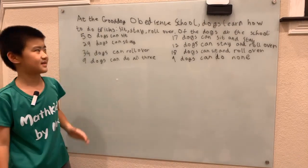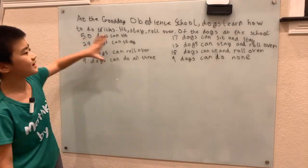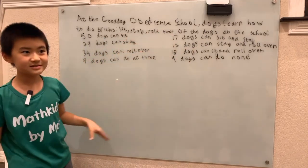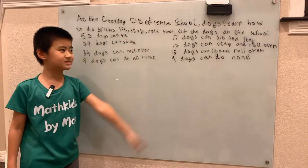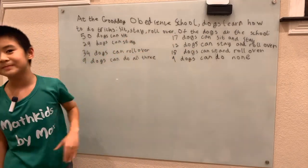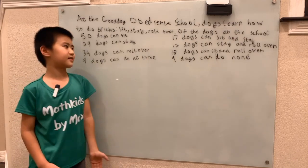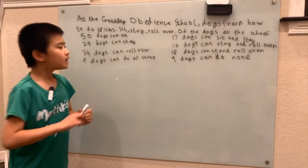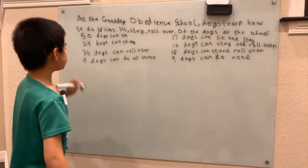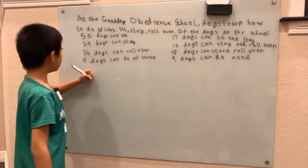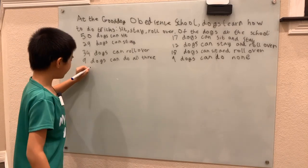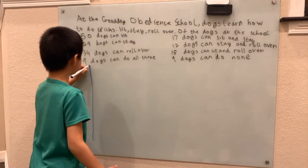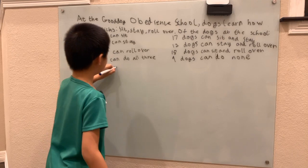Those 9 dogs that can do none — poor little dogs, those dogs must never get the treats. But anyways, enough about dogs. Let's get into the picture. I'm going to use a Venn diagram — a very special one instead of the kind we know.